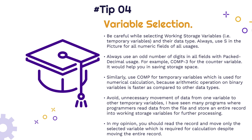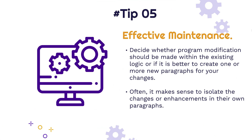Tip number five: effective maintenance. This step is related to any change you need to implement in an existing program already running in production. You need to decide whether program modification should be done within the existing module or if it is better to create one or more new paragraphs for your changes. Always isolate the change you are making and properly tag those changes with comments and a change log so you can easily identify who made the changes and which project they are related to.